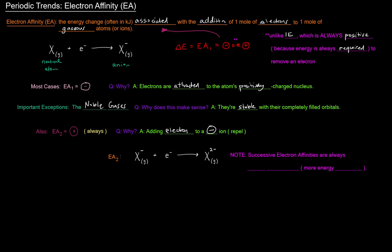In a way similar to ionization energies, successive electron affinities are always more positive, because if you keep adding electrons to more and more negatively charged species, more energy will be required.